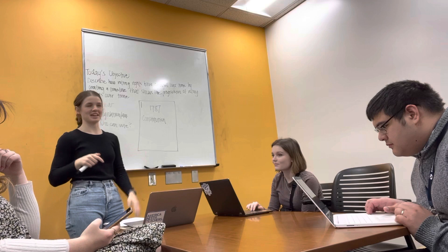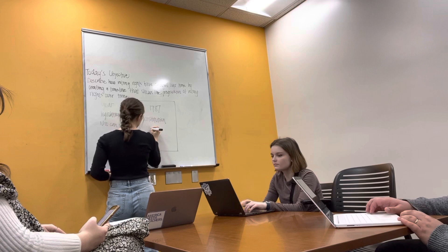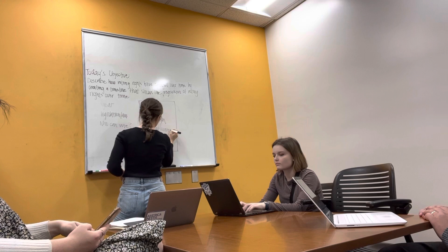So in this box we're just going to write: white, land-owning, Protestant — and Protestant is a type of Christianity.